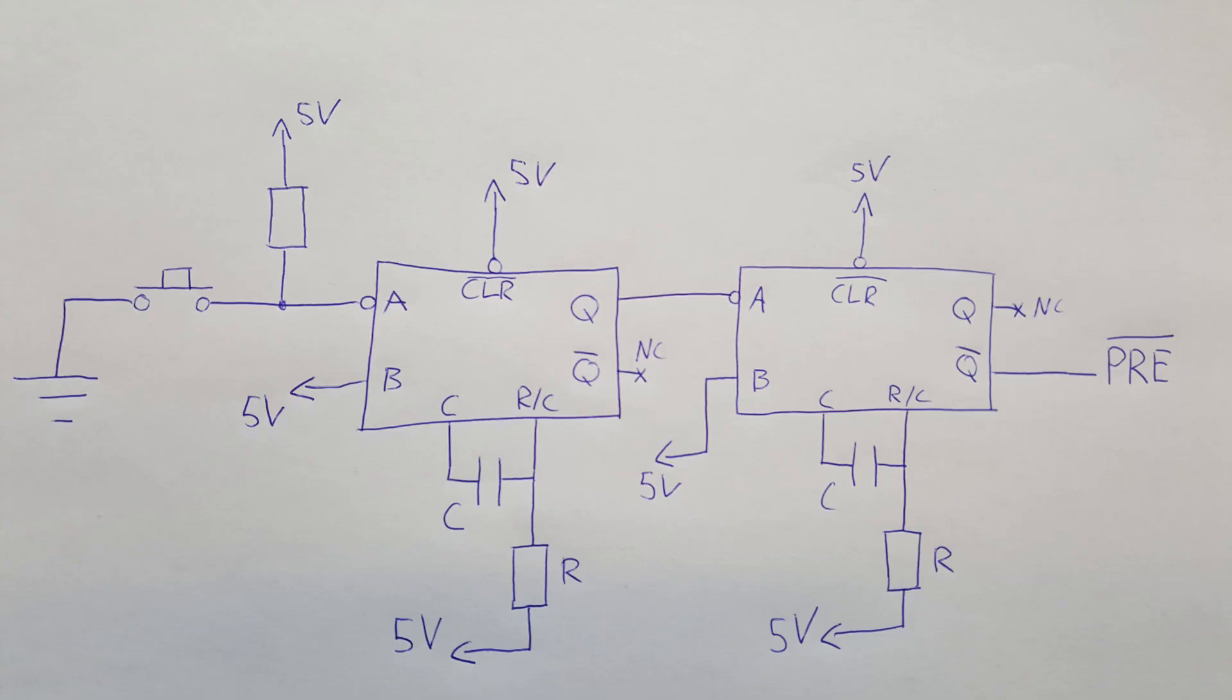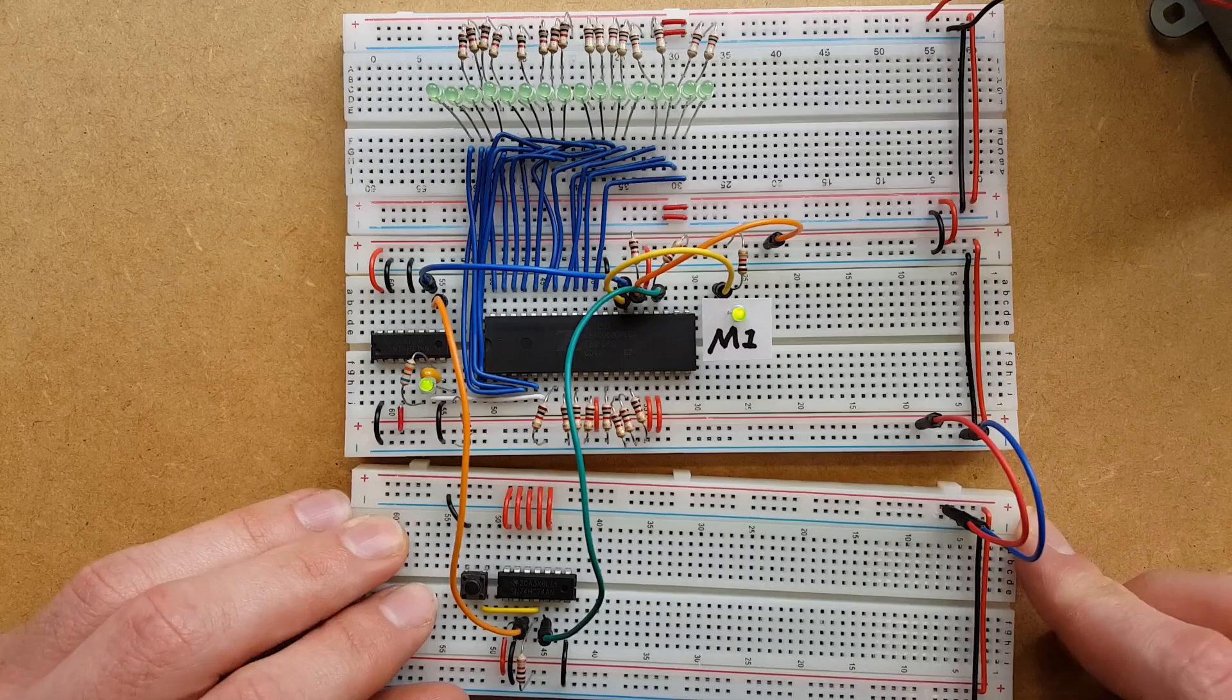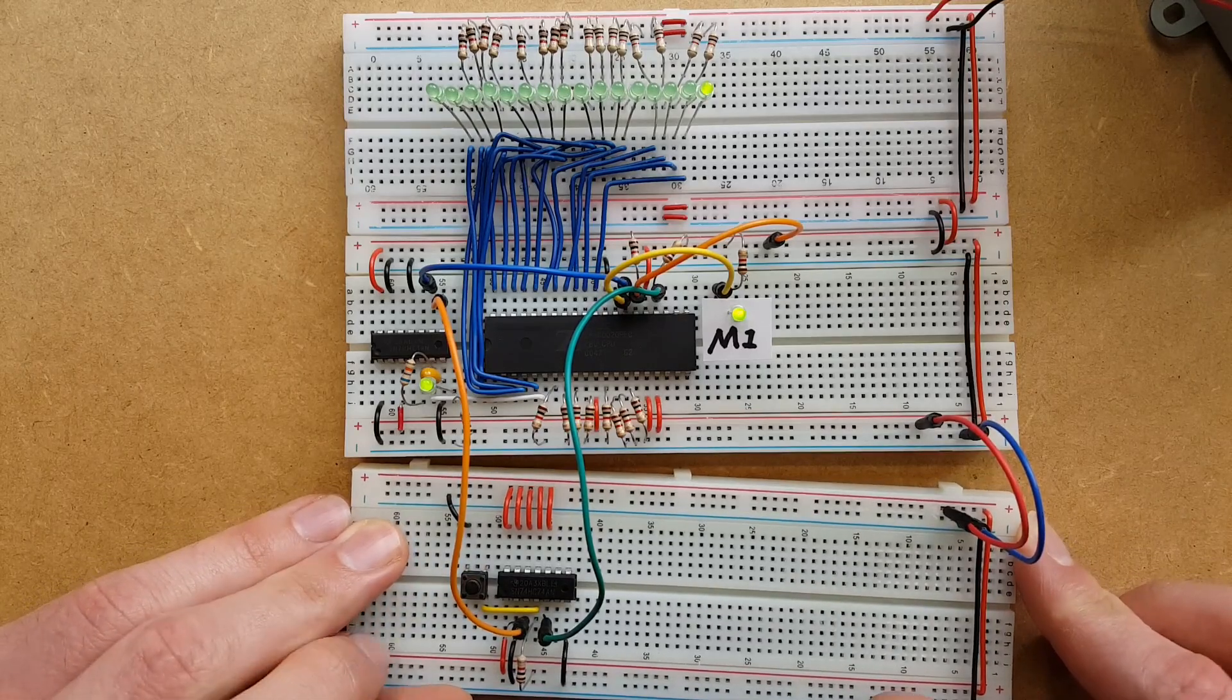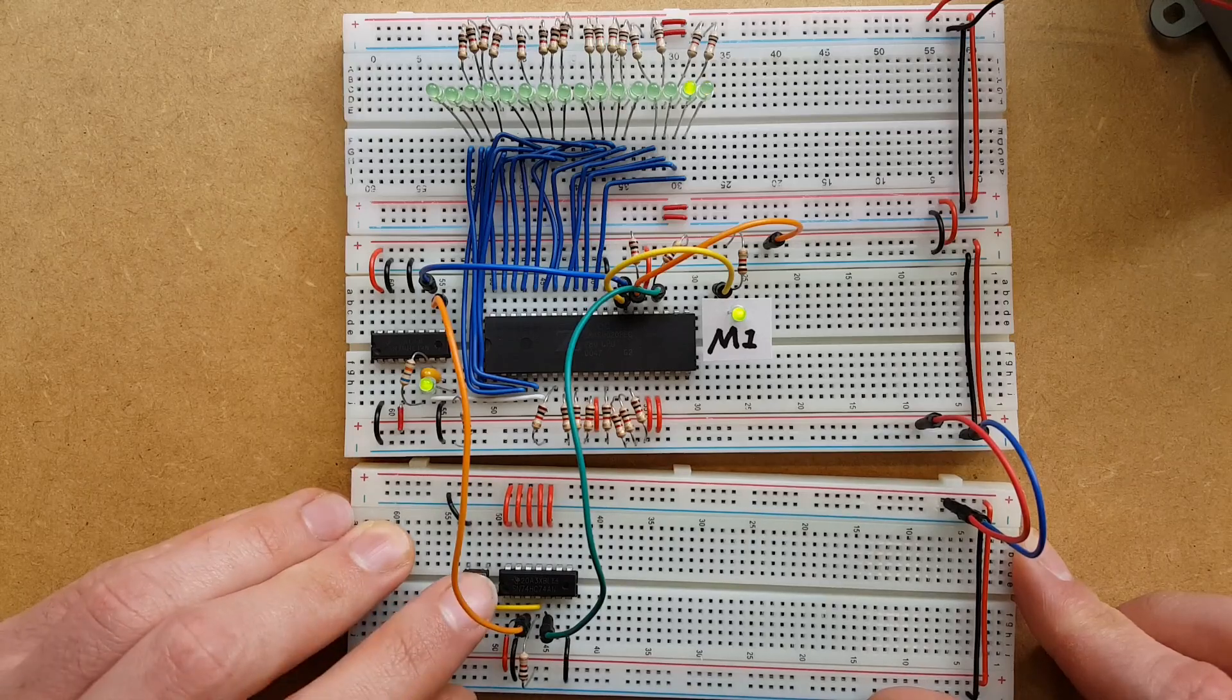And then, making a few alterations to the EXAMINE NEXT function we made, you could make the EXAMINE function. As an extra hint, use the slow clock and put some LEDs on the control signals. That makes it way easier to see what's going on.